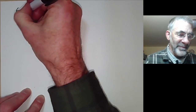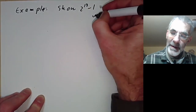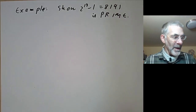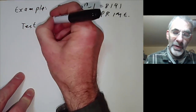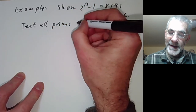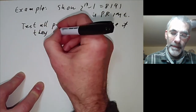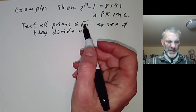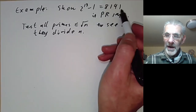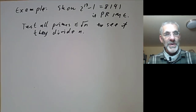Let's show that 2 to the 13 minus 1, which is 8191, is prime. The basic method is to test all primes less than or equal to the square root of n to see if they divide n — that works, but we'd have to test all primes up to about 90, which is a lot of work. Using Fermat's theorem we can greatly speed this up.